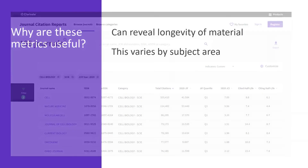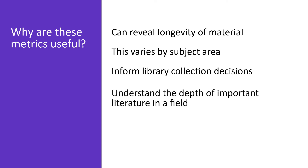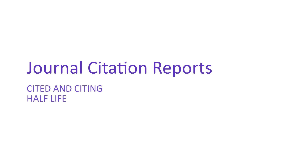Librarians can use this information to inform their collection decisions — how much of each journal are researchers using and should be accessible in the collection? Researchers can use both the cited and citing half-life data to understand the depth of important literature in their field, or understand if a journal is citing recent or older material. Use cited and citing half-life data to better understand your research discipline and make more informed collection and publication decisions.